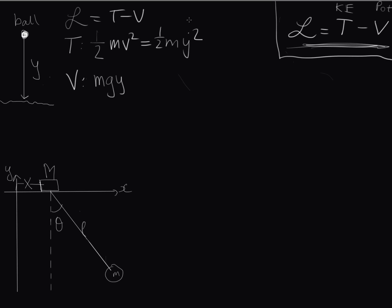So putting all of these together I can write my Lagrangian L is equal to a half m y dot squared minus mgy. So that is the Lagrangian for an object falling under a uniform gravitational field.